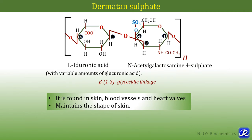Dermatan sulfate is the glycosaminoglycan which has L-iduronic acid or variable amounts of glucuronic acid, linked to N-acetylgalactosamine-4-sulfate by a beta-1,3 glycosidic linkage. Both chondroitin sulfate and dermatan sulfate have galactosamine as their amino sugar. Dermatan sulfate has iduronic acid as well as a variable amount of glucuronic acid. It is found in skin, blood vessels and heart walls, and it maintains the shape of skin.